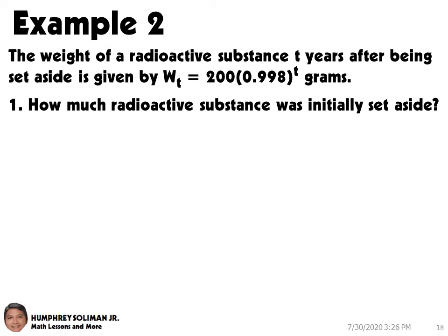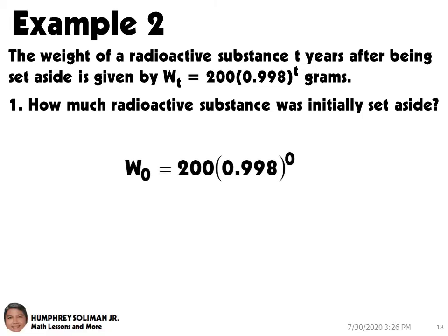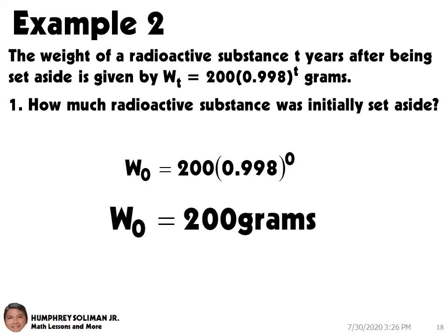In number 1, the initial weight is when the number of years T equals 0. So if we substitute T equals 0 in the equation used to model the weight of the radioactive substance, we will get W0 equals 200 times 0.998 raised to 0. Therefore, the initial weight is W0 equals 200 grams.